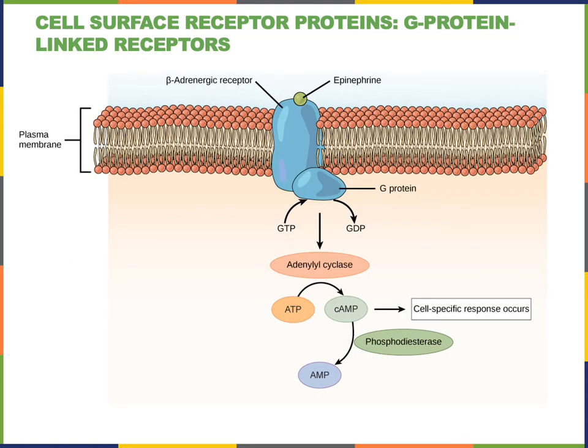Another class of cell surface receptor proteins are G protein-linked receptors. The beta-adrenergic receptor is an example of a G protein-coupled receptor. When the water-soluble hormone epinephrine binds to a binding site on the extracellular domain of the beta-adrenergic receptor, the beta-adrenergic receptor will become activated and will change its shape, leading to the activation of a G protein.